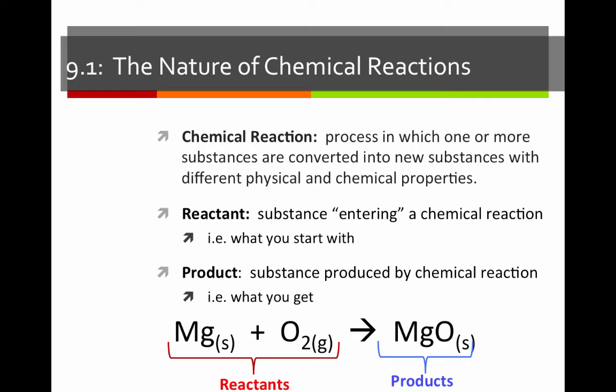It's important to know that you can have one or many reactants and one or many products. There's no limit to the numbers of reactants and products you can have. Likewise, it doesn't matter the order in which we write reactants or products, as long as the reactants are on the left and the products are on the right. I could have written this same equation as oxygen plus magnesium yields MgO, and it would mean the same thing.